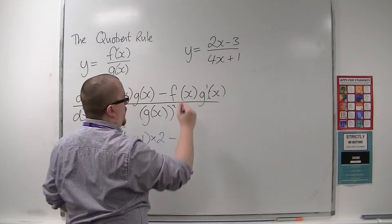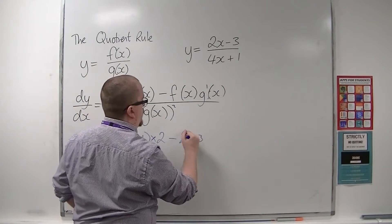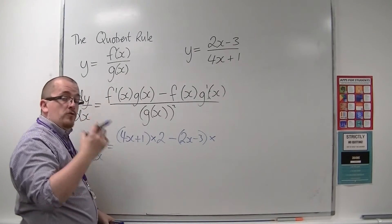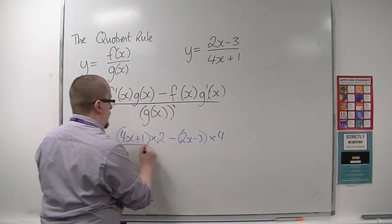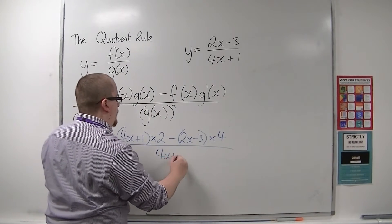Take away the top, so 2x minus 3, times the derivative of the bottom, so 4, all over the bottom squared.